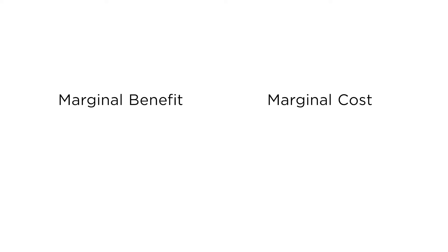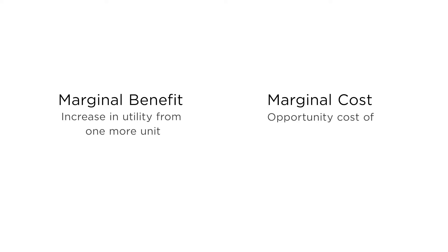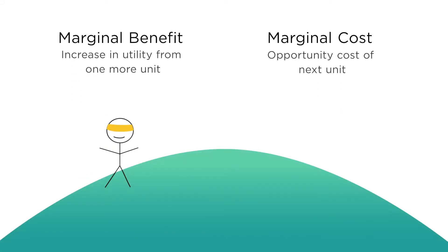To use this strategy of marginal analysis to maximize utility, it's helpful to think about the marginal benefit and the marginal cost of consuming the next unit of each good. The marginal benefit is the increase in utility from eating one more slice of pizza. The marginal cost is the opportunity cost of that next slice of pizza. If the marginal benefit of that next slice is greater than the marginal cost, you should eat more pizza — you should climb higher on the utility hill.